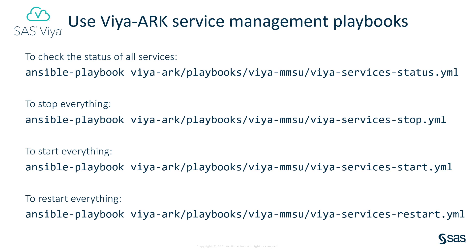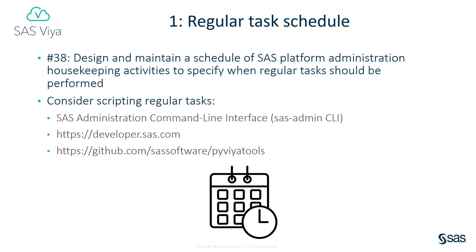And that brings us to the last task in our countdown. Number 1: Regular task schedule. Design and maintain a schedule of SAS platform administration housekeeping activities to specify when regular tasks should be performed. You'll need to decide which tasks in the checklist are important to you, and which to perform daily, monthly, annually, or at some other frequency. Obviously include other tasks in your schedule that make sense for your particular situation. Then follow that schedule and perform each of your set of maintenance tasks to help keep your SAS Viya deployment healthy, secure, and running effectively, so that it meets all your business and end-user stakeholders' needs.